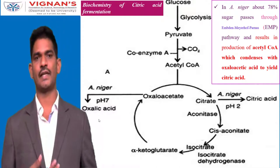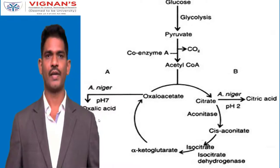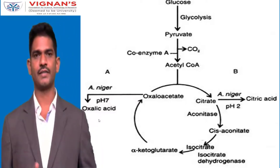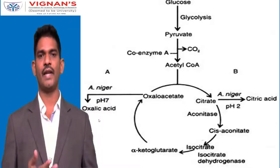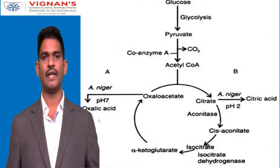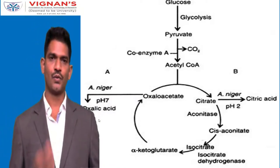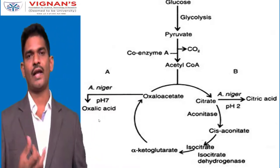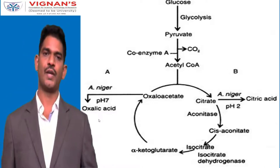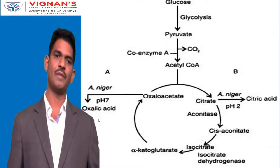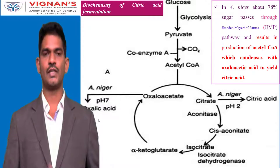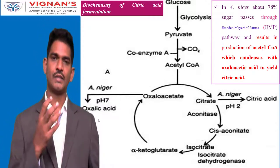The biochemistry of citric acid fermentation shows that glucose is the predominant raw material. It undergoes glycolysis to produce two molecules of pyruvate. Pyruvate is converted to acetyl-CoA by pyruvate dehydrogenase complex, present on the mitochondrial membrane of eukaryotes, releasing acetyl-CoA into the mitochondria. In the mitochondria, acetyl-CoA condenses with oxaloacetate to form citrate via the enzyme citrate synthase. In Aspergillus niger at pH 2, citric acid is released, indicating that production is a pH-driven process.